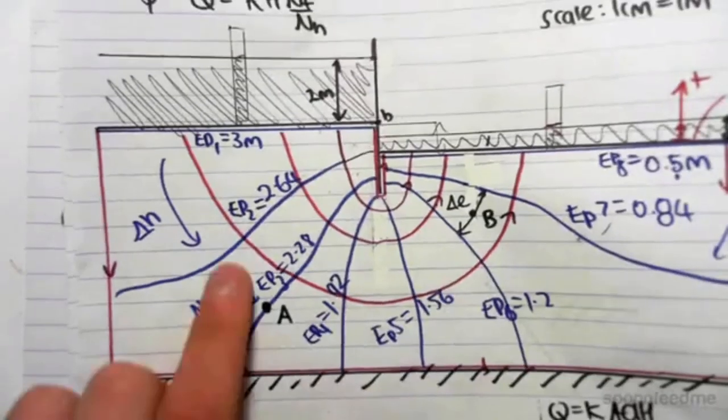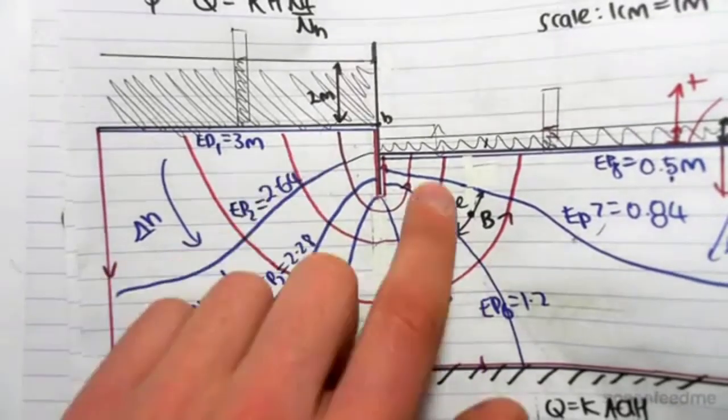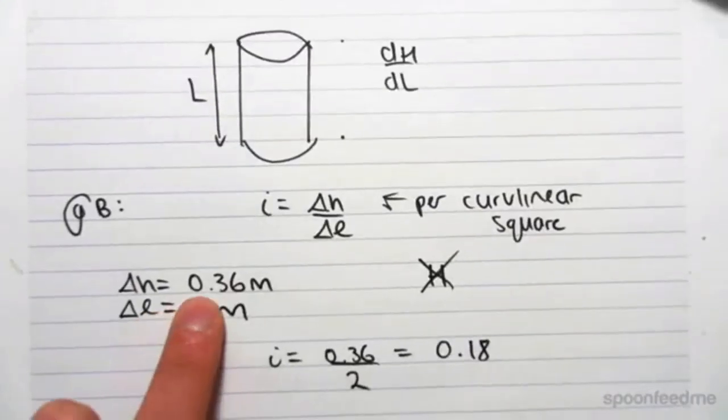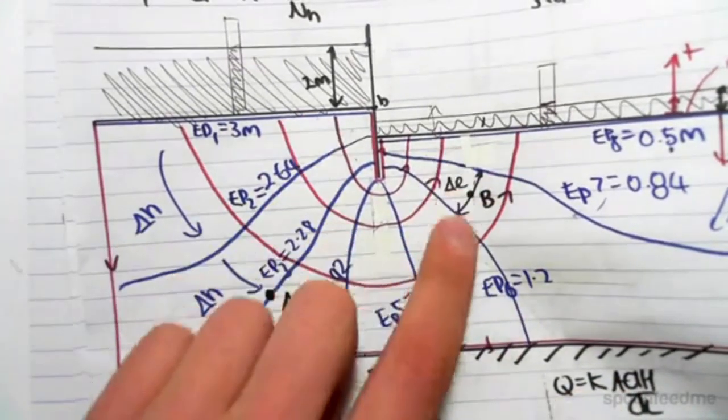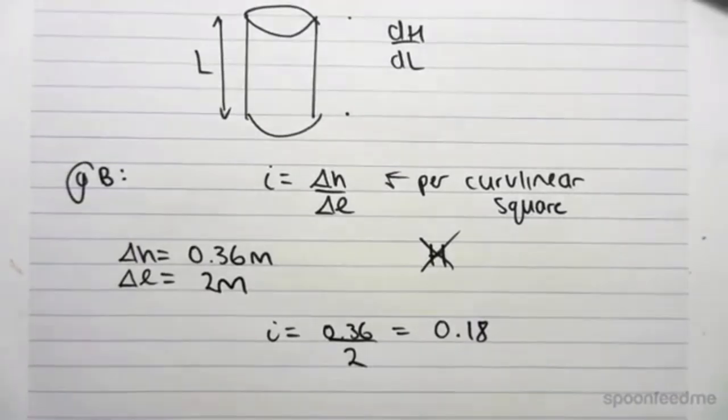But once again, the hydraulic gradient, you would just find per curvilinear square, where change in h is the same for every single one, but change in L is going to change depending on where you are in your flow net. Anyway guys, hope that helps. Thanks a lot.